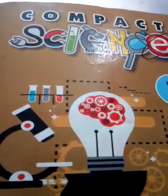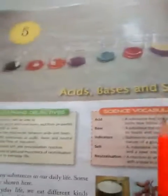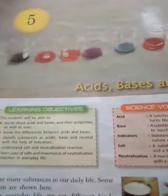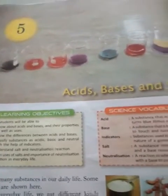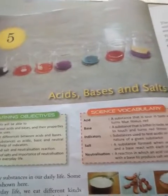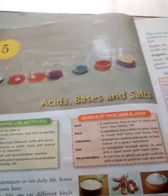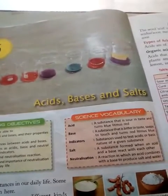Hello students. This is class 7th science and our next chapter is chapter 5: Acids, Bases and Salt. In this chapter we learn about acids and bases, their properties, their uses, and the differences between acids and bases.